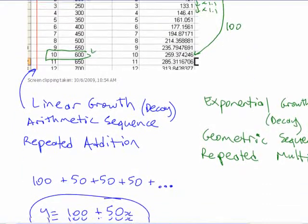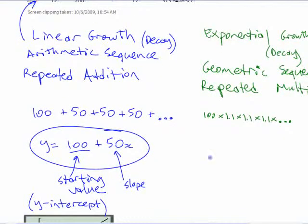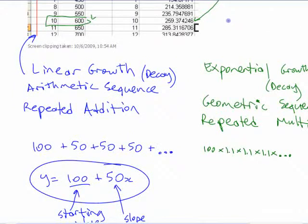So it would be like 100 times 1.1 times 1.1 times 1.1, right? And so on. If we wanted the 10 one, it would be, like you said, 100. What would be the shorthand for that? Times 1.1.